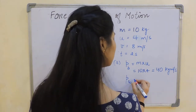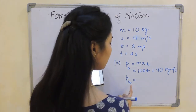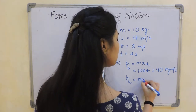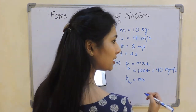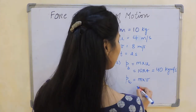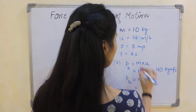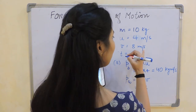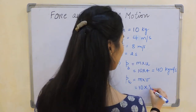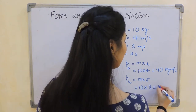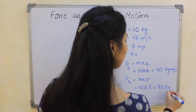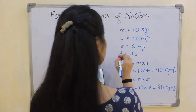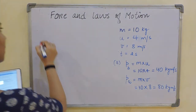Momentum after the force acts: P_after = mass × final velocity = 10 × 8 = 80 kg·m/s. So this completes part A of the question.